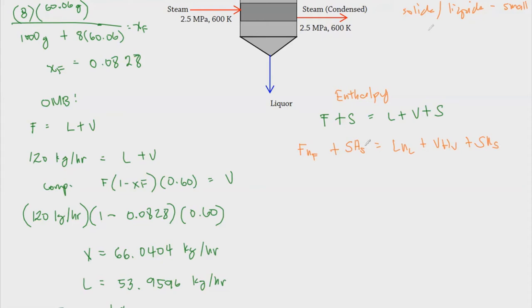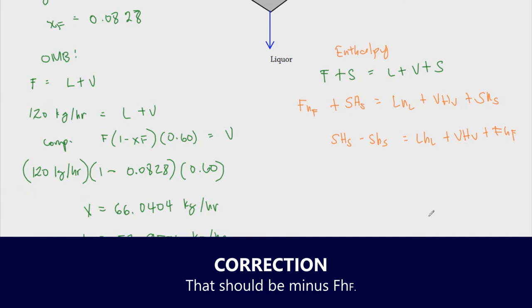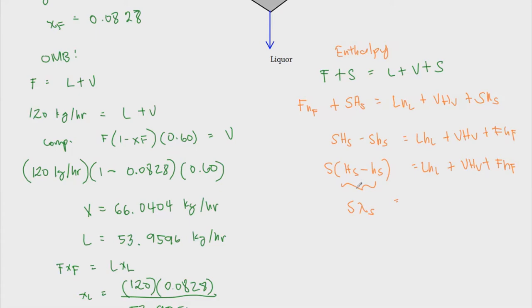Rearranging the enthalpy balance by transposing terms, we can factor out S times (H_S minus h_s). Knowing this is the difference between the vapor and liquid phase enthalpies at constant pressure and temperature, we can lump this into S times lambda_s — the latent heat of vaporization. Latent heat depends on the two states: liquid to gas is vaporization or condensation; solid to liquid is freezing or melting; solid to gas is sublimation.